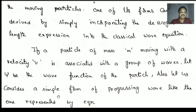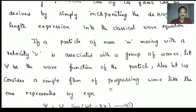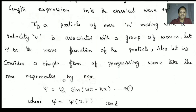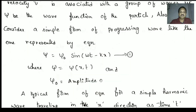So definitely the particle should follow the wave motion. Let psi be the wave function of the particle. Let us consider a simple form of a progressing wave. This is a simple harmonic wave equation: psi = psi₀ sin(ωt − kx). This is equation number 1.